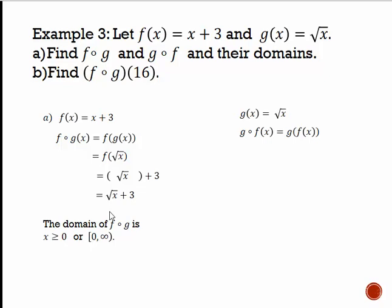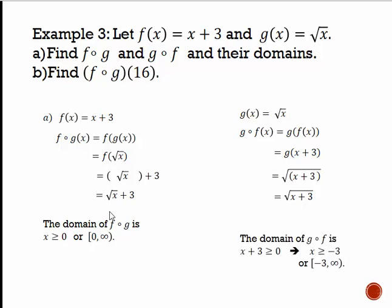If we reverse the order and do g∘f, we take g's formula and plug f into it — g of (x + 3). We take g's formula, √x, remove x, and plug in x + 3, giving us √(x + 3). This time, x + 3 is all inside the square root, giving a different domain: x + 3 ≥ 0, so x ≥ −3, or [−3, ∞). Then f∘g(16) = √16 + 3 = 4 + 3 = 7.